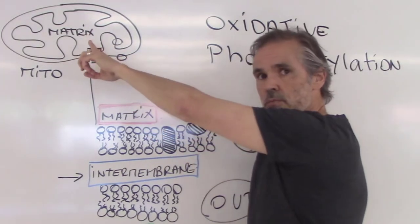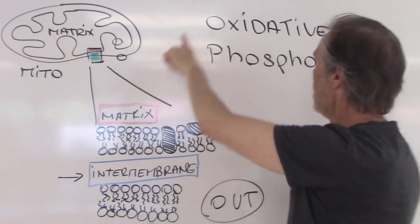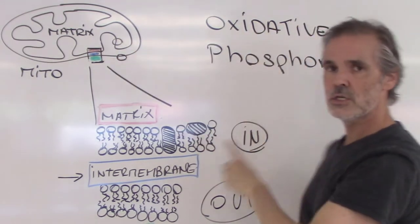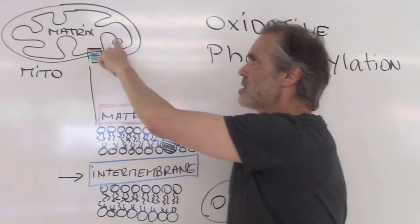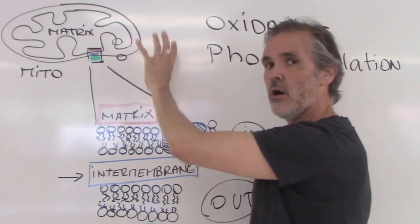Inside the matrix, this is where the Krebs cycle happens. Oxidative phosphorylation happens inside those membranes. So that's where it all happens.